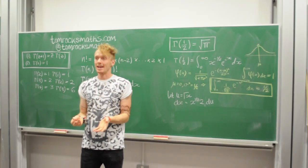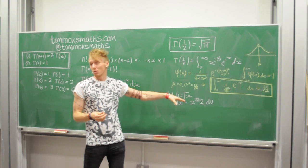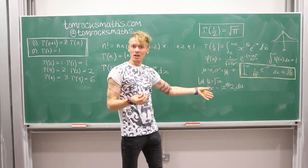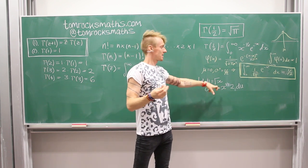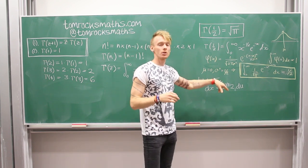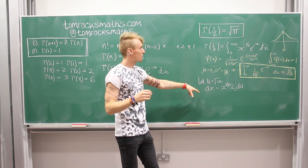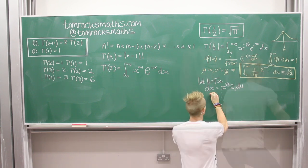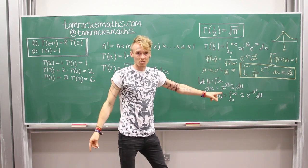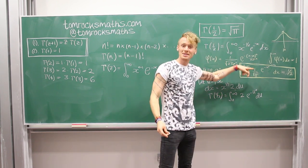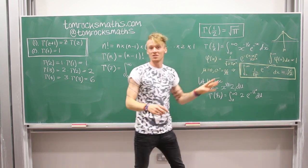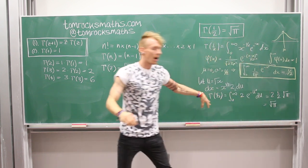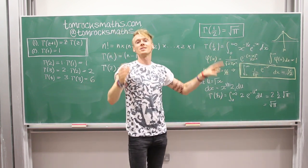The substitution that we want here is to let u equal the square root of x. So doing the chain rule, a little bit of rearranging, we get that dx is equal to x to the half times 2 times du. And so now if we change variables in the integral we want to calculate, we actually have, and this integral right here is basically the same as this one, with just a few constants floating around. And so the final answer is just gamma over half equals the square root of pi.